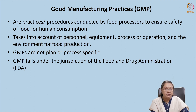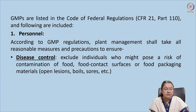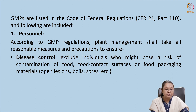GMP falls under the jurisdiction of the Food and Drug Administration. GMPs have been listed in the Code of Federal Regulations, that is CFR 221 in Part 110. Under this, certain categories have been given. The first and most important category is personnel, because it is the human resource that is directly involved in food production. According to GMP regulations, plant management in industries should take reasonable measures and precautions to ensure certain factors.